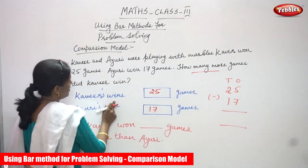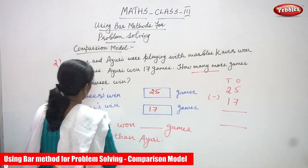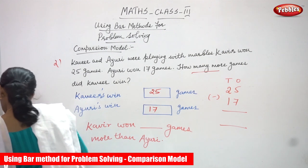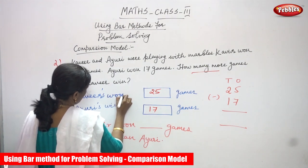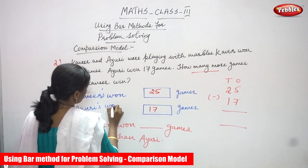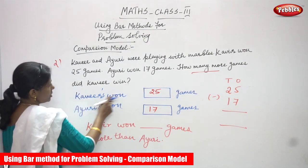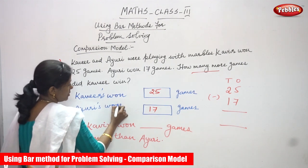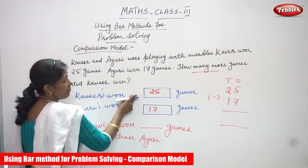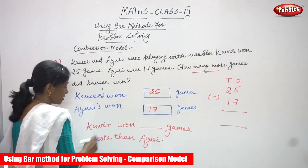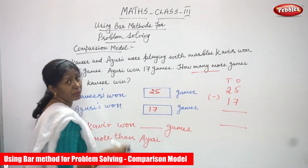So we set up: Kaveer's wins and Ayuri's wins. Kaveer won 25 games and Ayuri won 17 games. The question is asking how many more games did Kaveer win — that is, Kaveer won dash games more than Ayuri. You have to find how many more games Kaveer won.